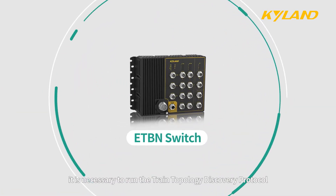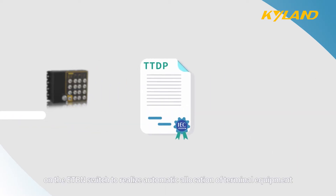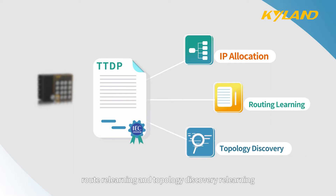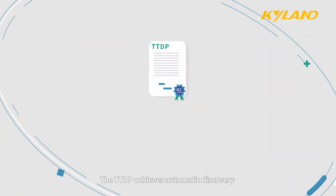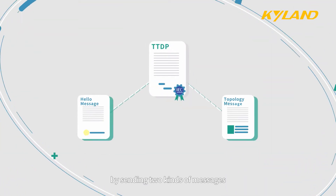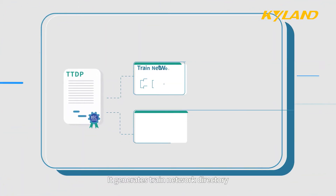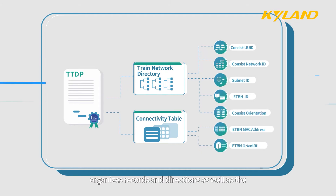Therefore, it is necessary to run the Train Topology Discovery Protocol on the ETBN switch to realize automatic allocation of terminal equipment IP addresses, route relearning, and topology discovery relearning. The TTDP achieves automatic discovery by sending two kinds of messages. It generates a train network directory and connectivity table from the collected data, organizing records and directions as well as ETBN MAC address and ETBN direction.